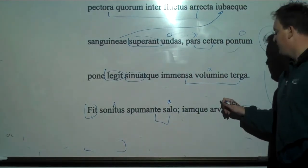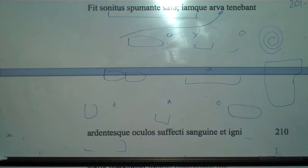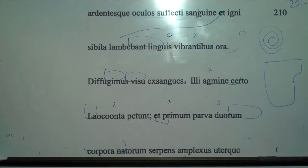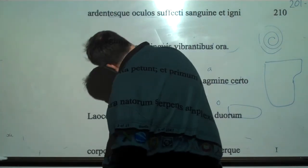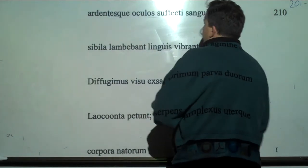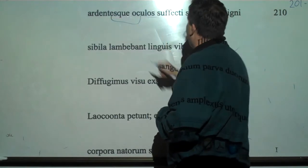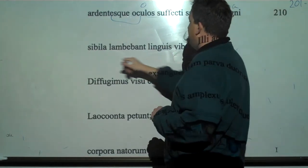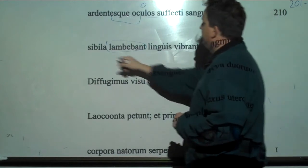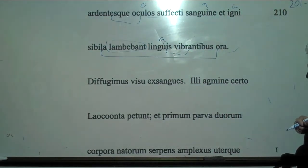And now they held the lands. So now they are suddenly on the lands. And what are they going to do? And ardentes oculos. And having suffecti, having suffuse. Now suffecti here, this PPP from sufficio, it's taking an accusative, like a body part, or accusative respect we could call it. Having filled their burning eyes with blood and fire. And they licked their hissing mouths with their vibrating tongues. Oh man. Not so good.